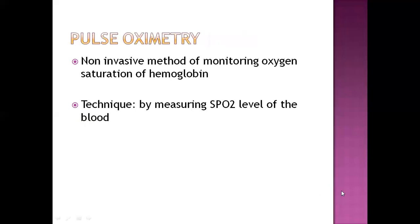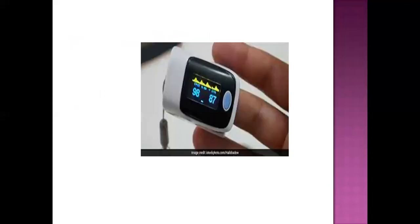The next procedure is pulse oximetry, which is a method of monitoring oxygen saturation of hemoglobin. The full form of SpO₂ is saturation of peripheral oxygen — this is the saturation of oxygen with hemoglobin at the peripheral part of the body, measured at the fingers using a pulse oximeter.